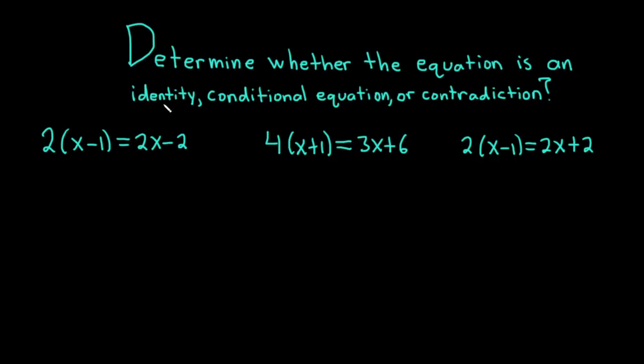An identity is an equation that is true for all real numbers in the domain of the variable. A conditional equation is an equation that is true for some real numbers, but not all, in the domain of the variable.